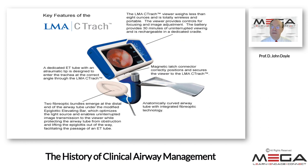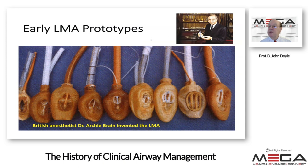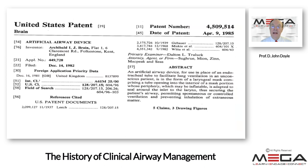Archie Brain developed a variety of supraglottic airways for various uses, including one through which one could intubate. One interesting technology was the LMA CTrach, which allowed visualization of the glottic aperture during placement and passing of tubes under direct vision — though this product is no longer commonly available. Brain worked on a great number of prototypes using radiographic imaging and cadavers to get the initial design right. In the 1980s, he was able to patent the laryngeal mask airway — filed in 1982, granted in 1985 as a U.S. patent.